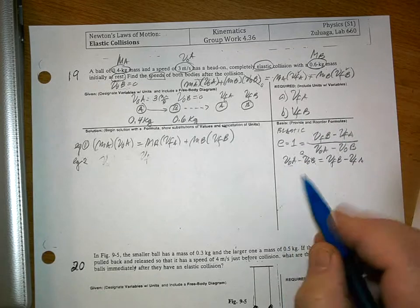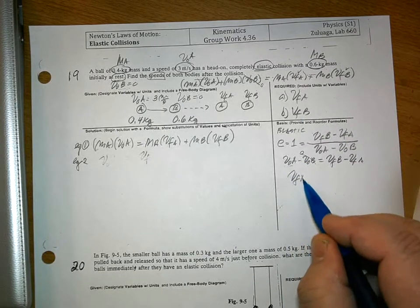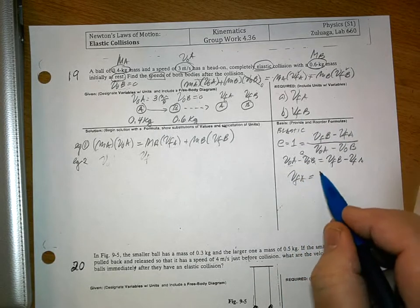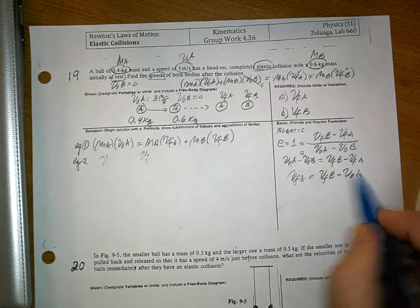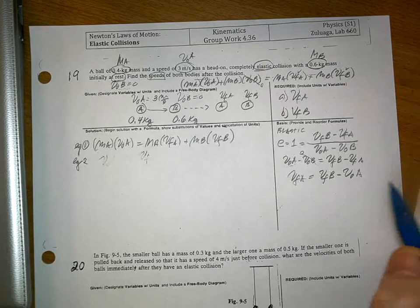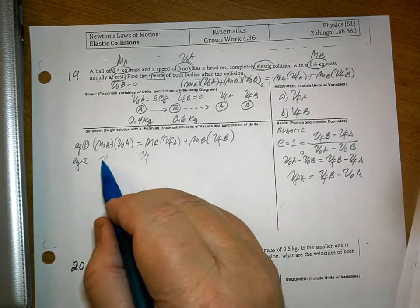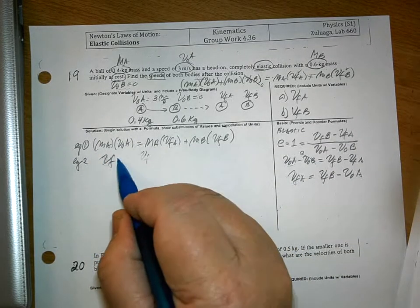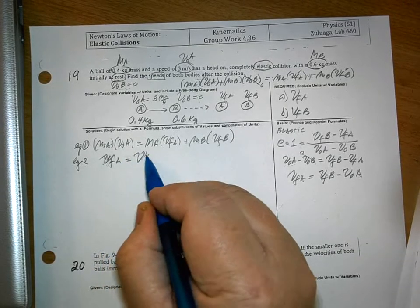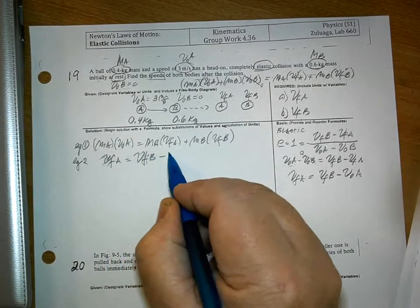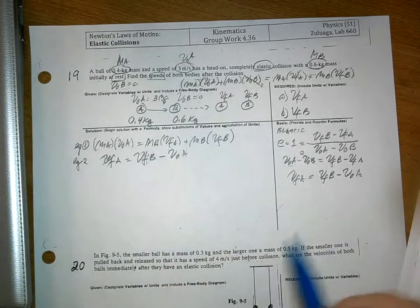I'm going to move this to this side. It becomes VFA is equal to VFB minus VOA. When I move this to the other side, it becomes negative as well. So, this is our second equation.